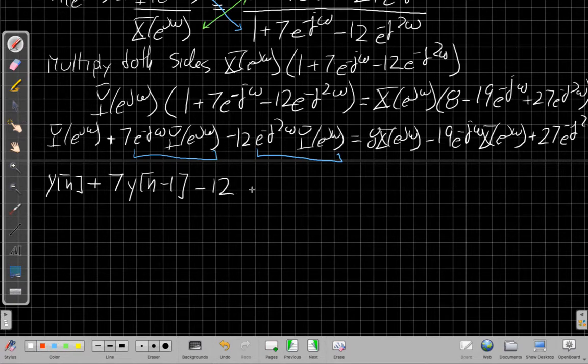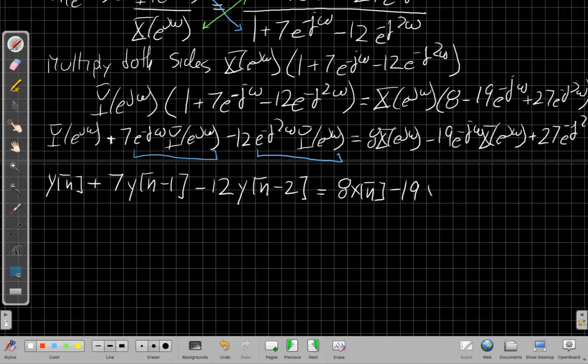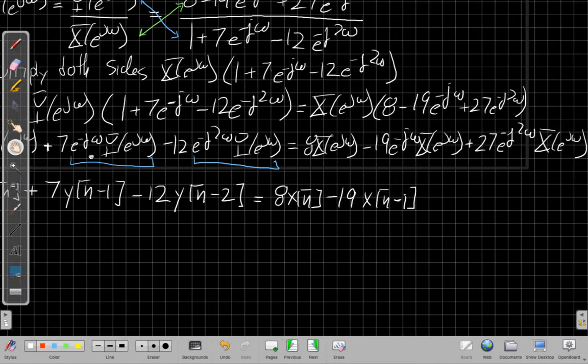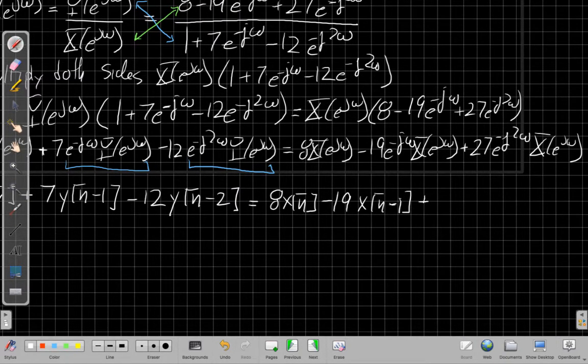So just taking one term at a time on the inverse Fourier transform, I get the left-hand side of my difference equation. Similarly, on the right-hand side, I get 8X of N minus 19 X of N minus 1, and then let's scoot over so we can see the last term plus 27 X of N minus 2.